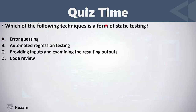Which of the following techniques is a form of static testing? Error guessing — no, error guessing is a type of dynamic testing, covered in chapter 4. Automated regression testing — also dynamic testing. Providing inputs and examining the resulting output — also dynamic testing, which requires code execution. Reviews is a form of static testing — code reviews mean we review our code manually.